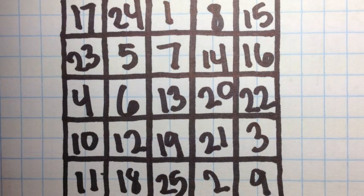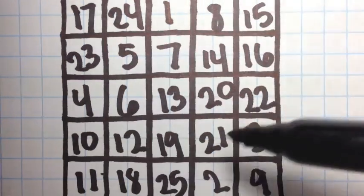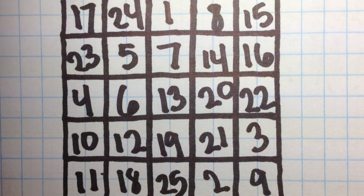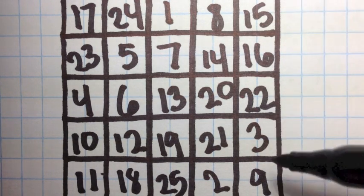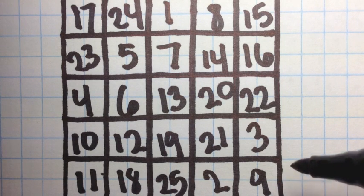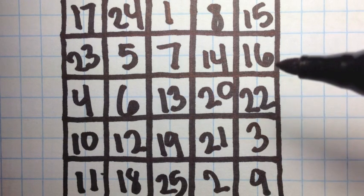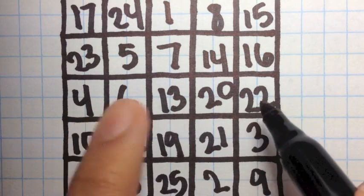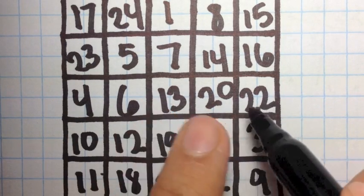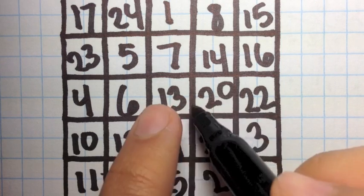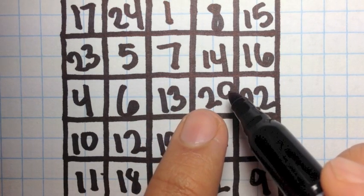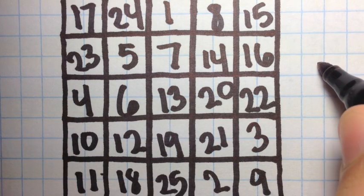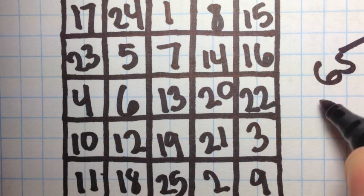Similar to the 3x3 magic square, there's a magic constant for the 5x5 magic square as well — but of course, it's not 15. We can add up one of the rows to find the magic constant. So let's use a random row: 22 plus 13 equals 35, plus 20 equals 55, plus 10 equals 65. So we'll assume our magic constant is 65.